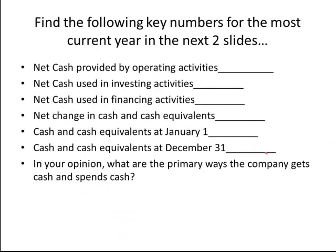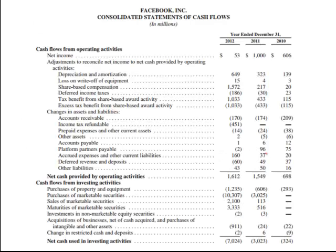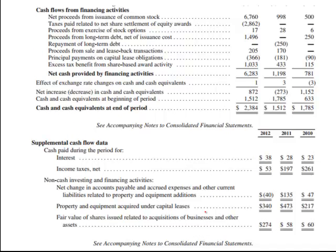Let's turn and look at a corporation. The cash flow is on two different pages, so let's find these numbers for Facebook. Cash provided from day-to-day operations: $1,612,000,000. Cash used for investing activities: $7,024,000,000 — looking at the large ones, they bought $10 billion in marketable securities, which is interesting. And for financing: $6,283,000,000. The overall change in cash is $8,872,000,000. They also got cash by selling some stock, which is a big one.